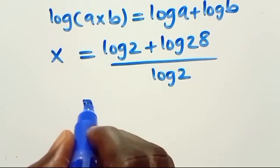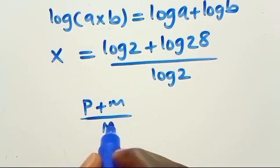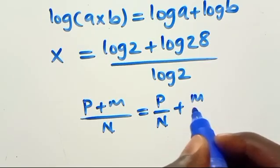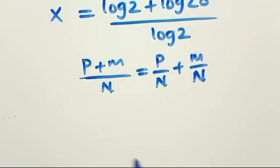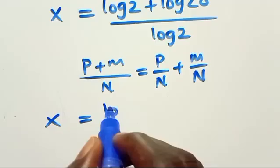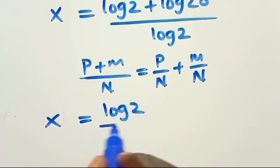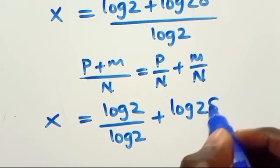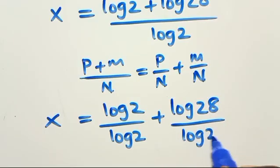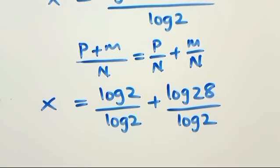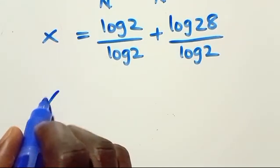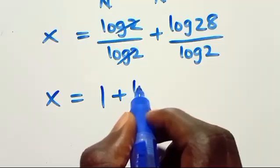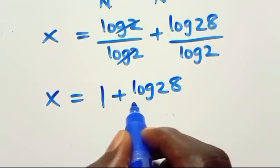We recall that when we have a parameter p plus n over n, we can split this as p over n plus n over n. So x equals log 2 over log 2 plus log 28 over log 2. Since log 2 over log 2 equals 1, we have x equals 1 plus log 28 over log 2.